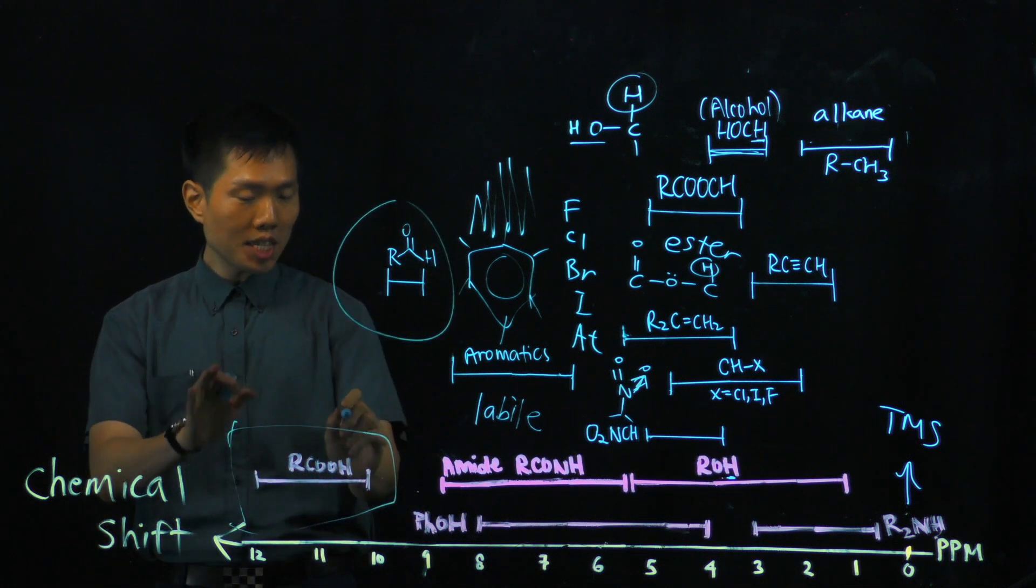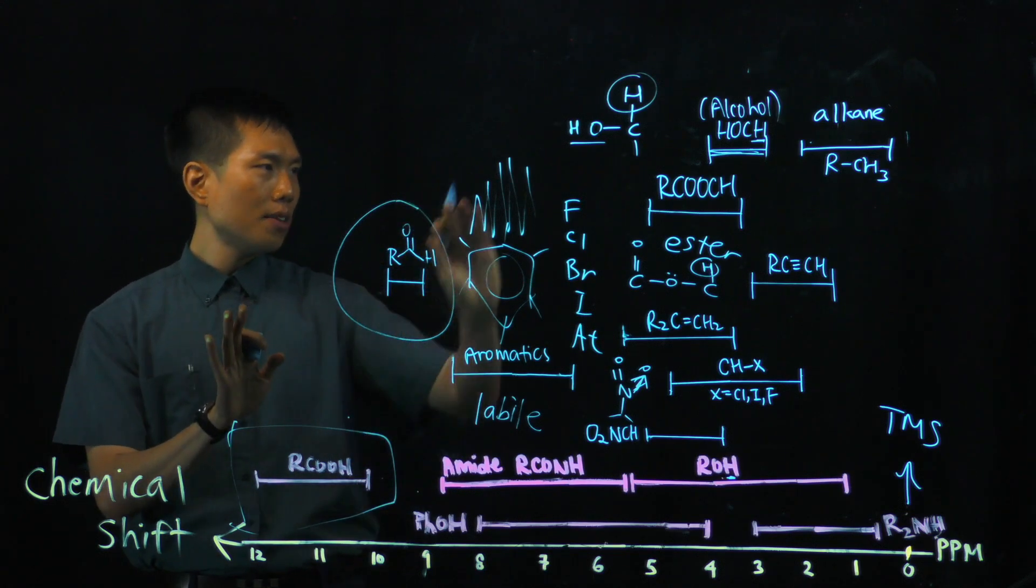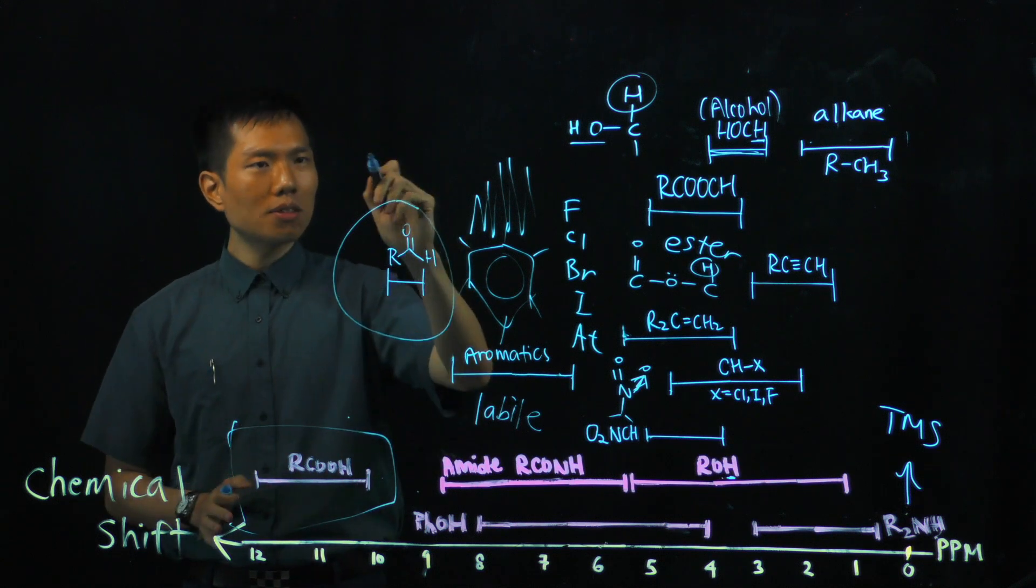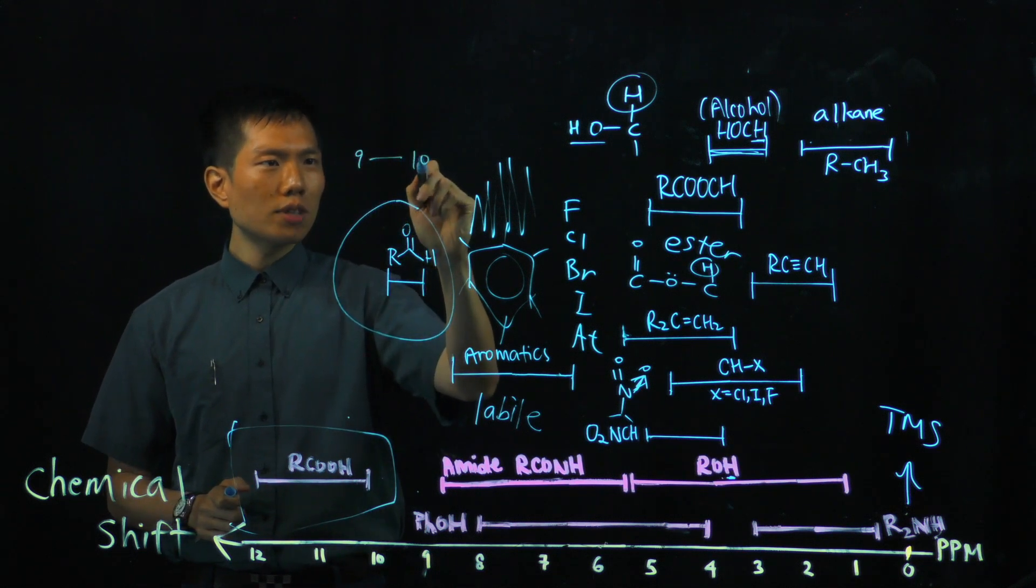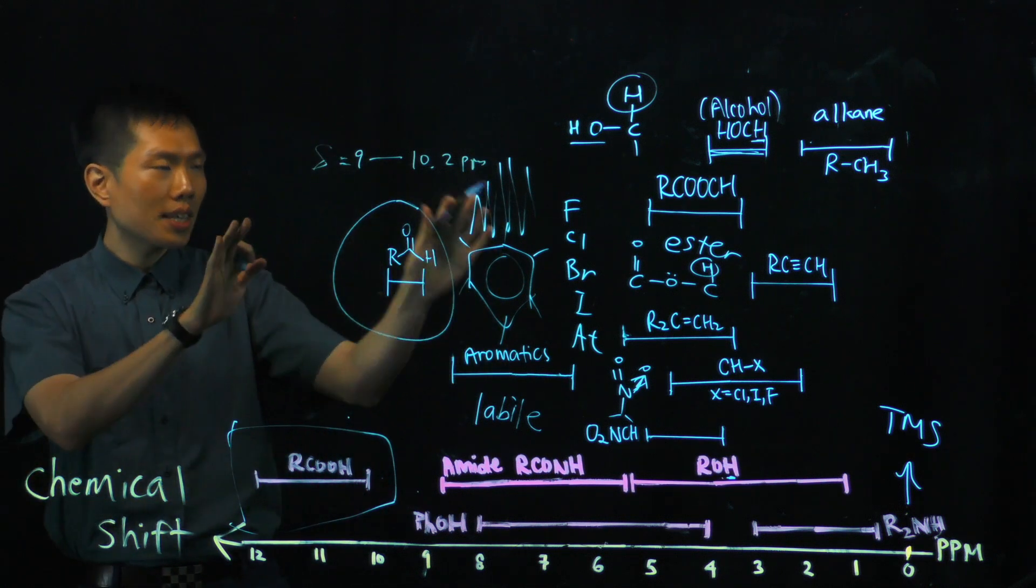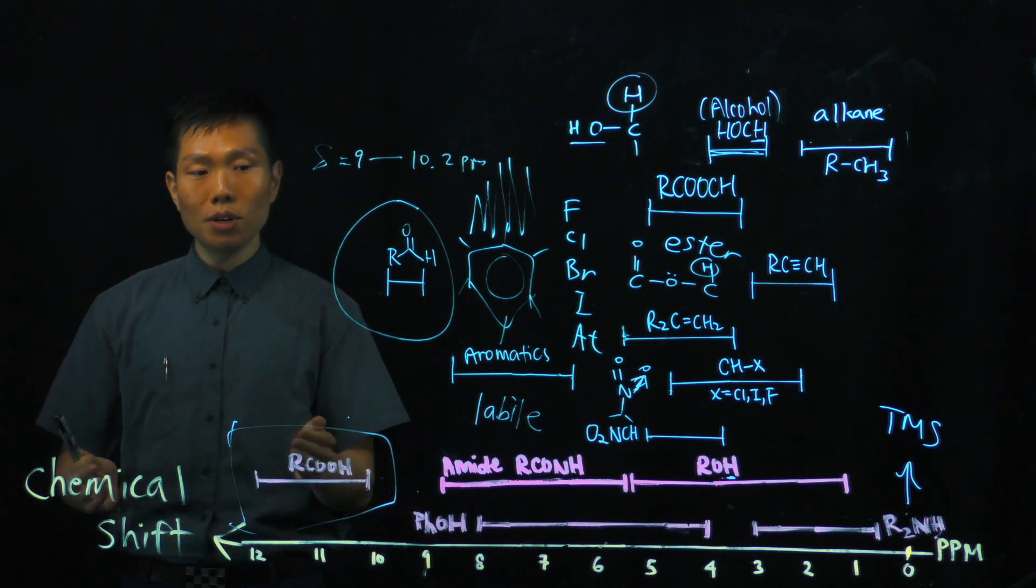The aldehyde and carboxylic acid. These are very clear because you won't see any overlap between other functional group signals. The aldehyde will be about 9 to 10.2 ppm, chemical shift. This can't be mistaken for anything else. And as the one for the carboxylic acid, 10 and above.